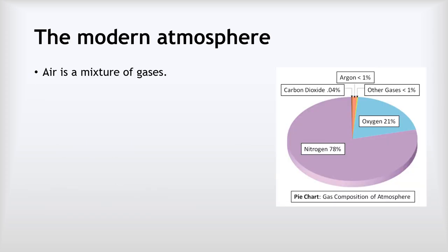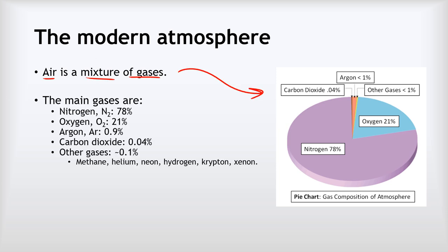Okay, so the modern atmosphere. Air is a mixture of a range of different gases and we can see those summarized in the pie chart here. So the main gases are nitrogen which is 78%, oxygen which is 21%.